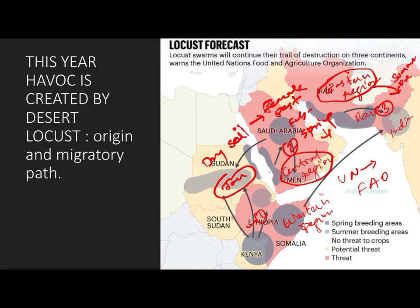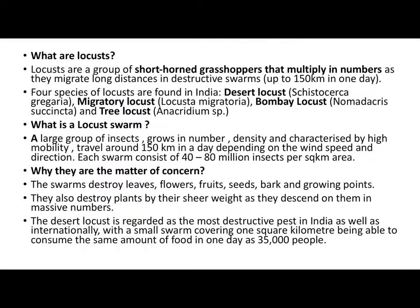Summer breeding happens on the India and Pakistan side. In India, locusts enter mainly through Pakistan and Iran — this is the major route. One more route exists through western India.